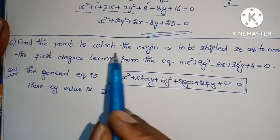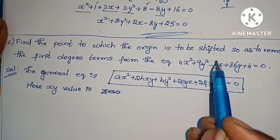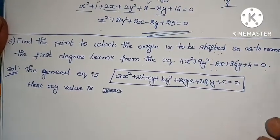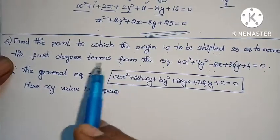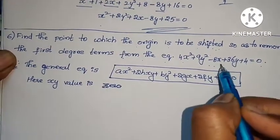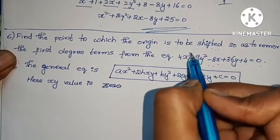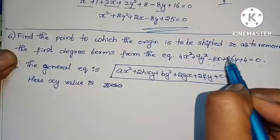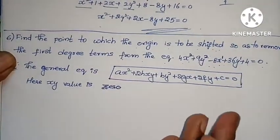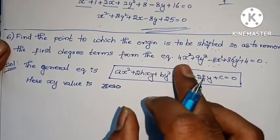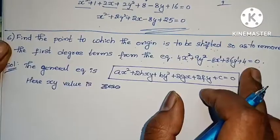Next question: find the point to which the origin is to be shifted in order to remove the first degree terms. First degree terms are x and y (power 1), while x square and y square are second degree (power 2). Given equation: 4x square plus 9y square minus 8x plus 36y plus 4 equals to 0.